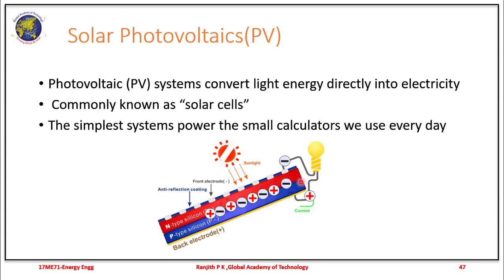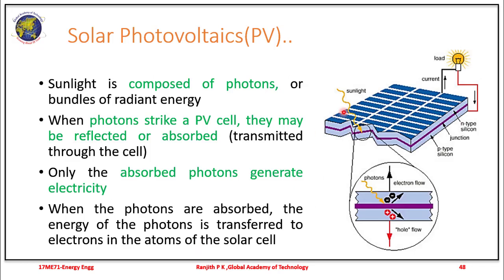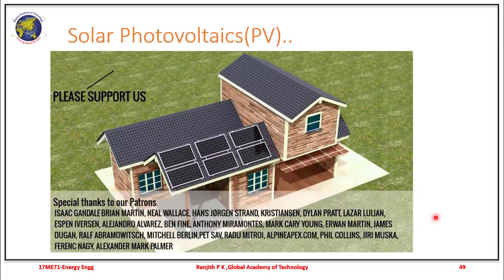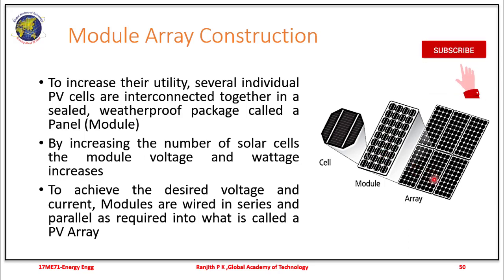Solar photovoltaics convert light energy directly into electricity, usually also known as solar cells. The simplest photovoltaic system we use is found in calculators. Sunlight is composed of photons or bundles of radiant energy. When photons strike a PV cell, they may be reflected or absorbed — only the absorbed photons generate electricity. When photons are absorbed, energy is transferred to the electrons in the solar cell. A single cell is put into a module of many cells, and many modules make into an array, usually wired in series or parallel combination to generate electricity.